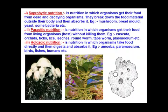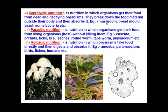In saprophytic nutrition, the organism gets its food from dead and decaying organisms. They break down the food material outside their body and then absorb it. Examples are mushroom, bread mold, yeast, and some bacteria. This figure is showing saprophytic nutrition.